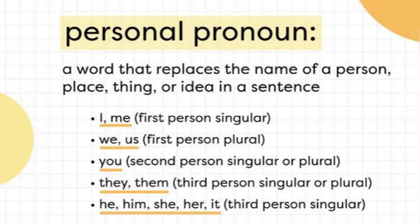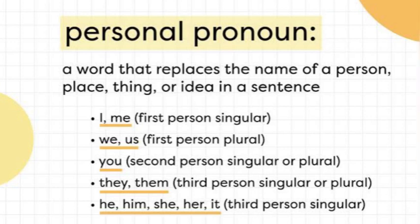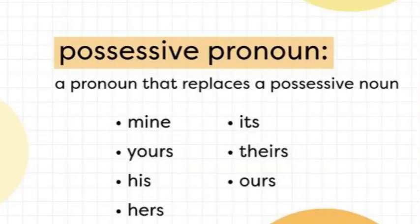جمع متکلم کو ہم Arabic یا Urdu grammar میں جمع متکلم کہتے ہیں۔ 'You' second person singular اور plural دونوں کے لیے آتا ہے جب آپ کسی دوسرے شخص کے لیے استعمال کر رہے ہوتے ہیں۔ دو یا دو سے زیادہ کے لیے 'they' اور 'them' کا استعمال کرتے ہیں۔ 'He'، 'him'، 'she'، 'her'، 'it' — یہ آپ کے third person singular ہیں۔ Personal pronoun صرف وہی ہوتا ہے جو کسی شخص، جگہ، چیز یا نظریہ کے نام کو replace کر دے۔